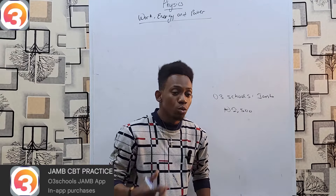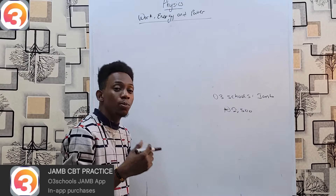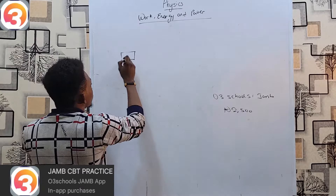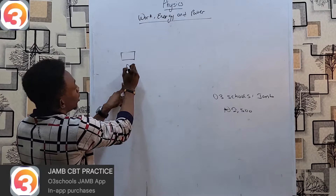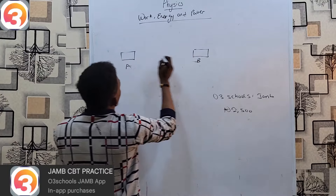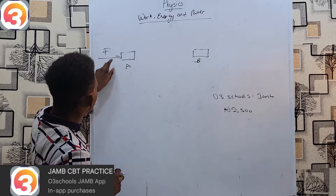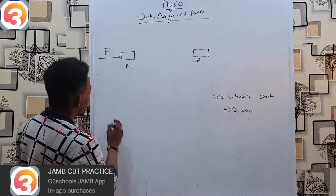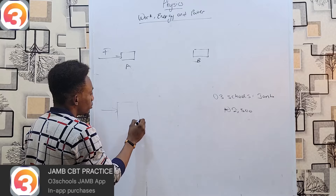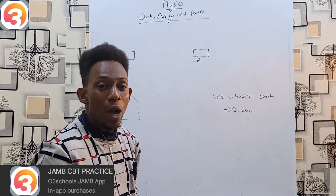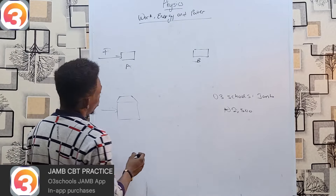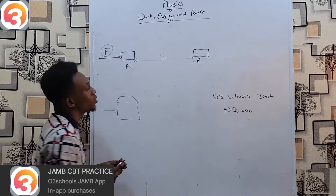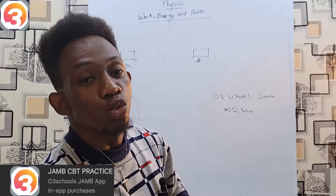Let's start by defining these things. What is work? Work is done whenever a force moves its point of application a distance in the direction of that force. That simply means if we have a box and we move it from point A to point B, we have to apply a force. Once this force has moved the object from one point to another, we can say work has been done. If you push against a wall that doesn't move, your work done is zero — because for work to be done there are two necessary agents: force and distance. If there is no distance, there is no work being done.